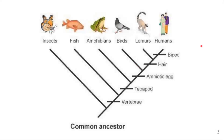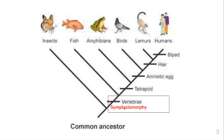Now let's look at a full example. This phylogenetic tree has a common ancestor, with different branches for insects, fish, amphibians, birds, lemurs, and humans. Being a vertebrate is a feature of all of them — it's an ancestral trait passed down to each, making it a symplesiomorphy. As mentioned, symplesiomorphic characters appear at the bottom of the tree because they're common ancestral features.